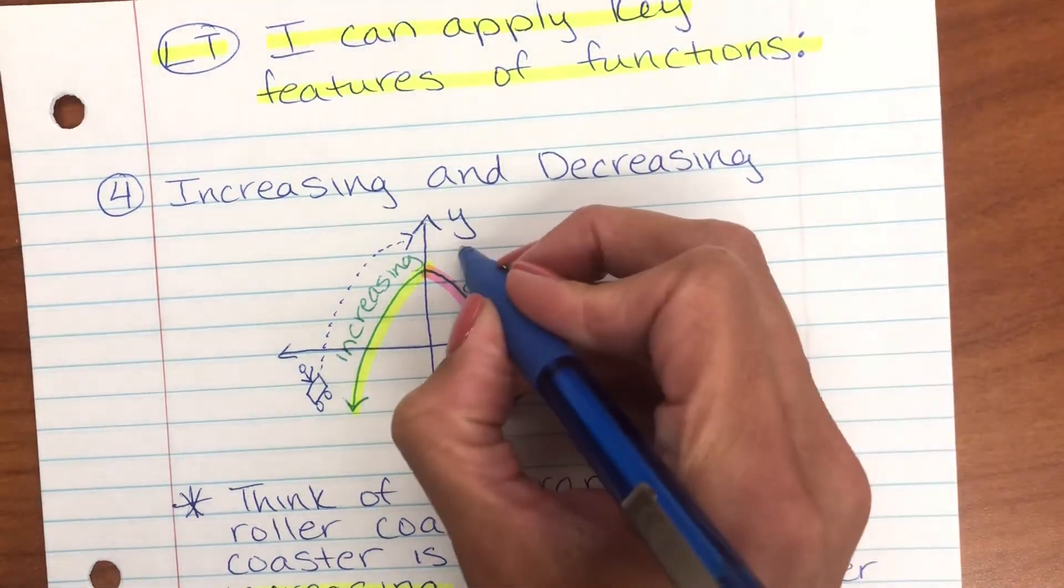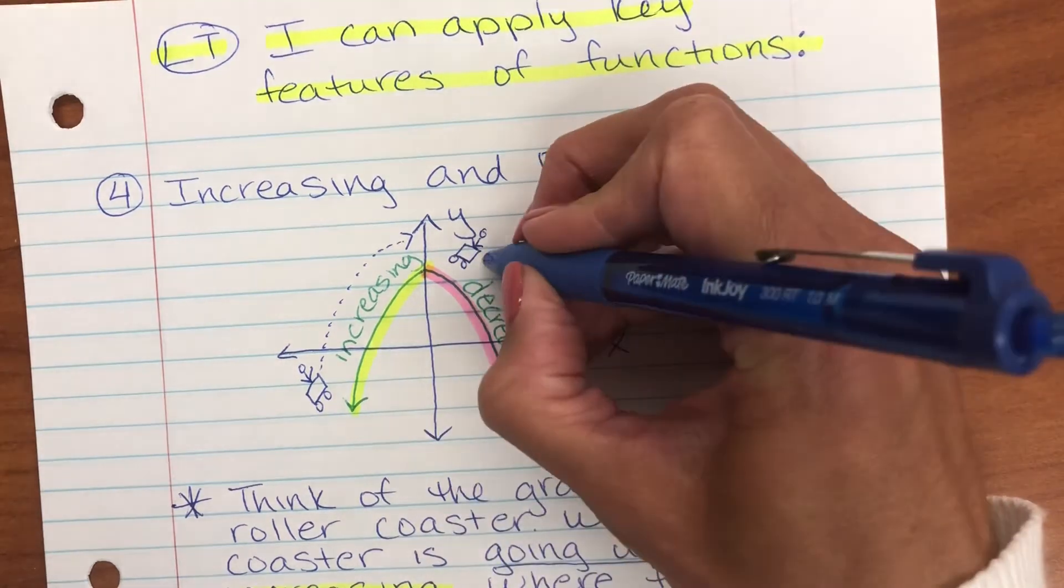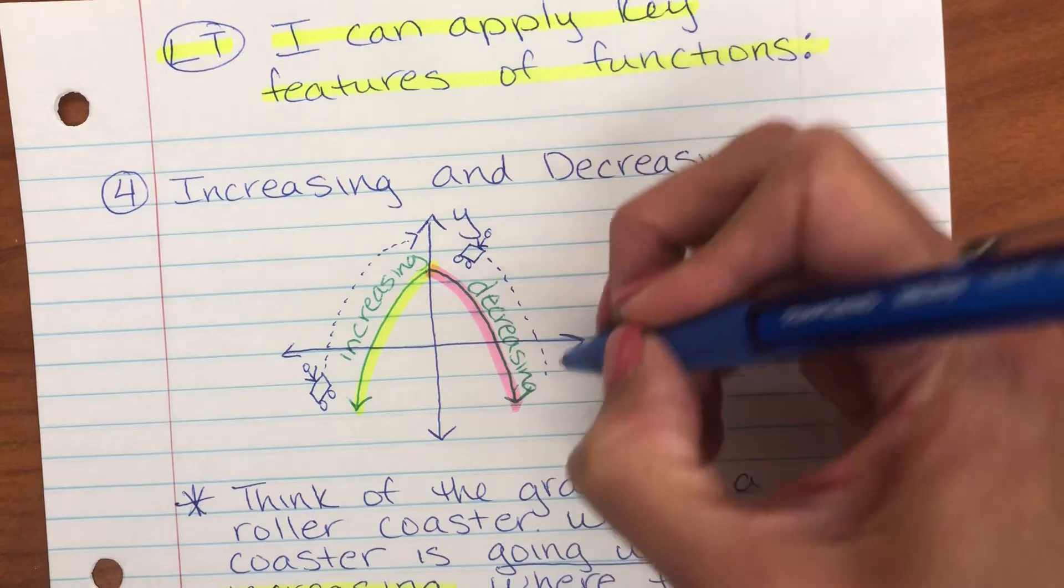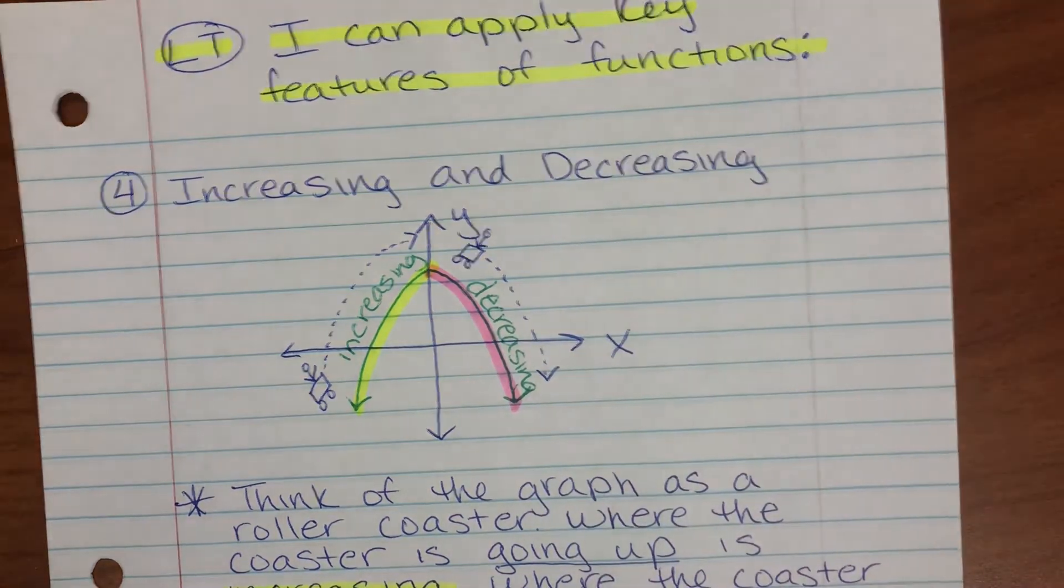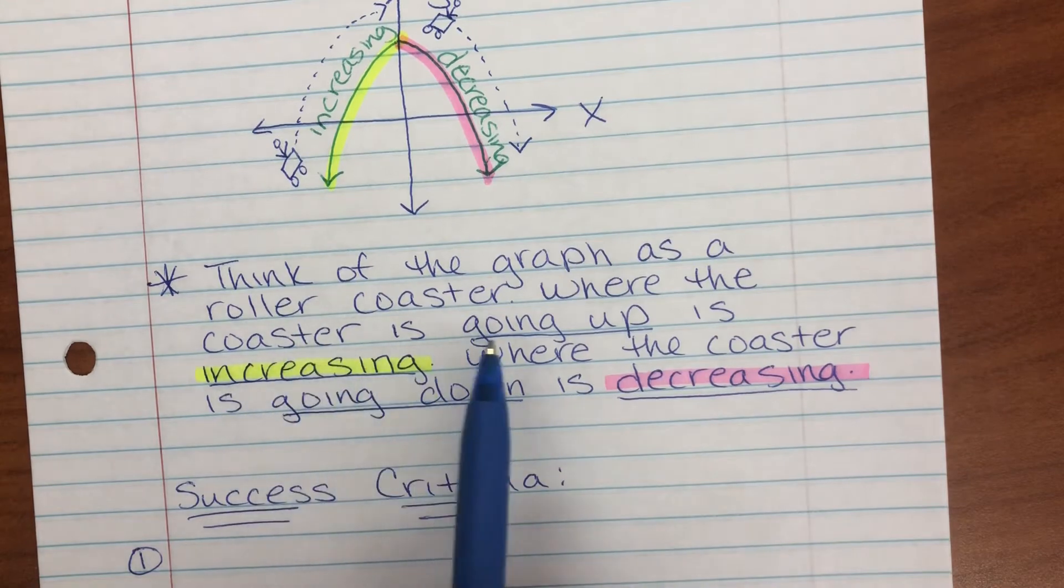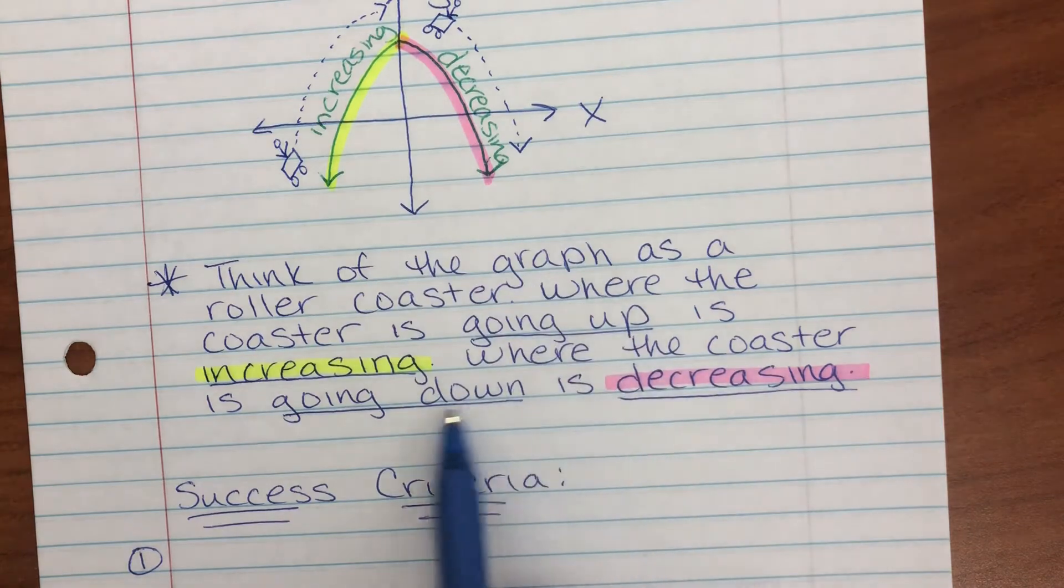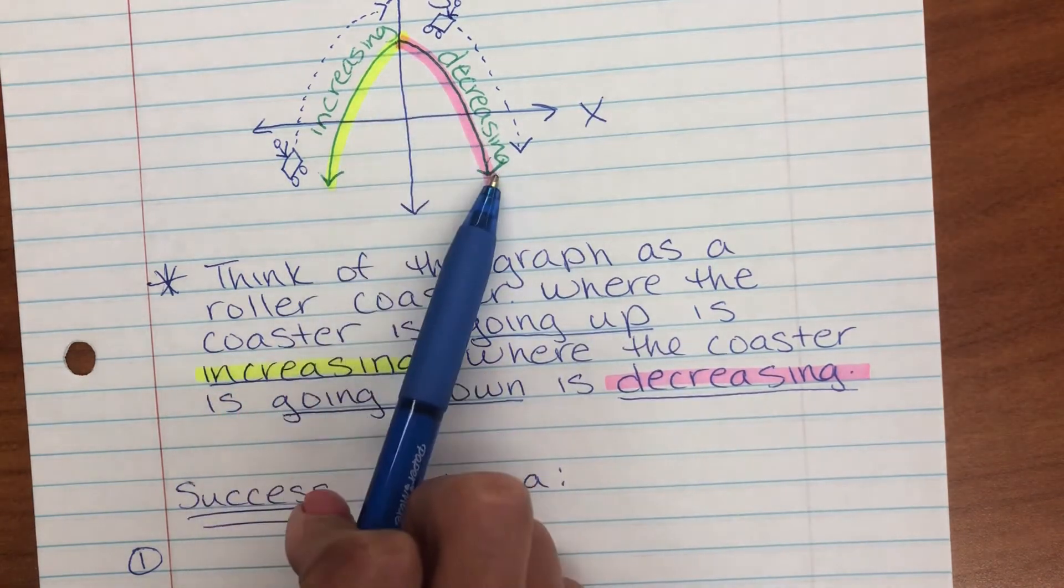And anytime our roller coaster goes down, that's decreasing. Going up is increasing, and then going down is decreasing.